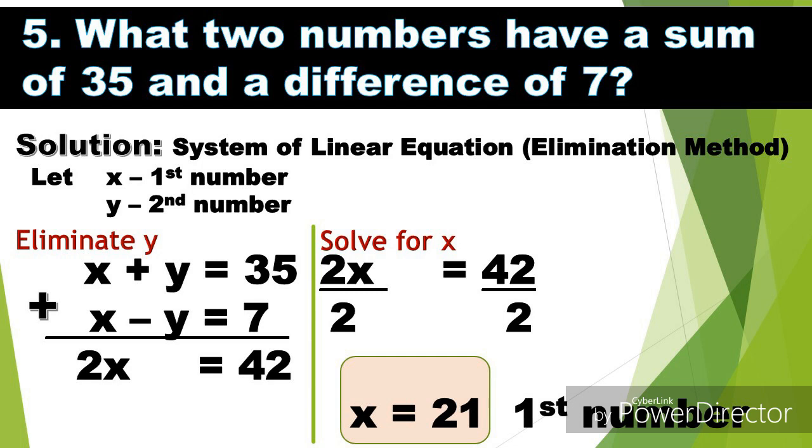So we have two equations. Ang una natin gagawin is to eliminate y. To eliminate y, i-add natin yung dalawang equation. So x plus x is 2x, and positive y plus negative y is 0. 35 plus 7 is 42.